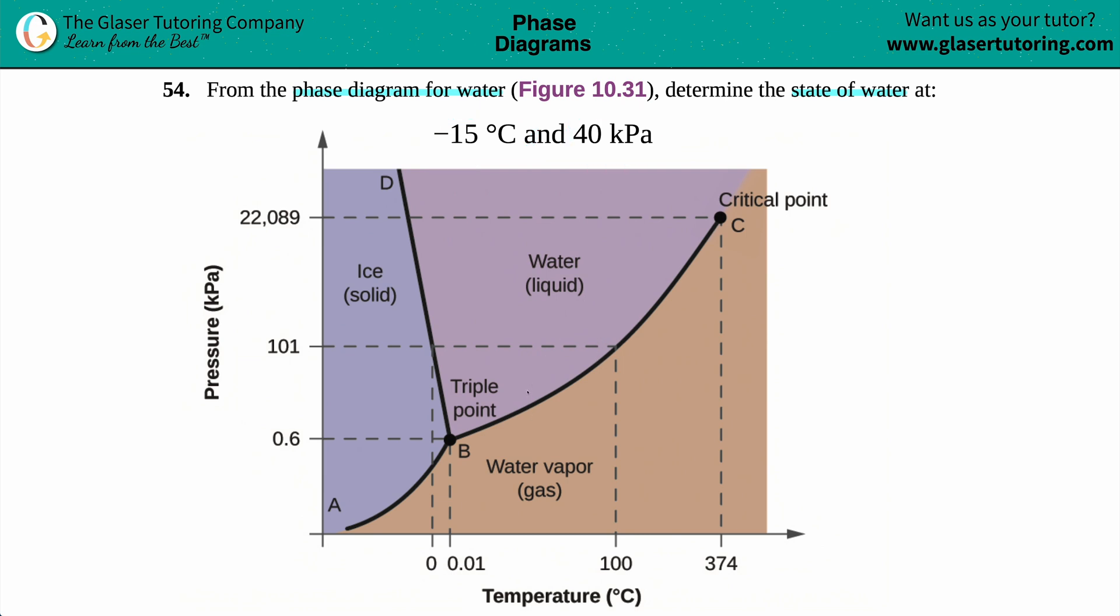All we have to do is follow the axes. The x-axis is the temperature and the y-axis is the pressure in kilopascals. We need to find where negative 15 degrees Celsius and 40 kilopascals meet. It doesn't matter whether you start at temperature or pressure. Let's start with the pressure in this case, 40 kilopascals.